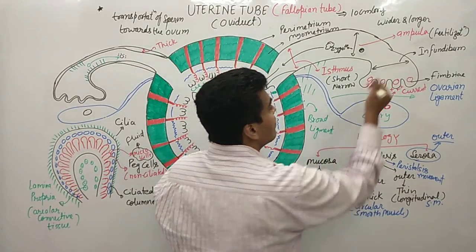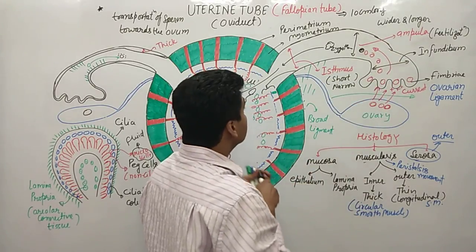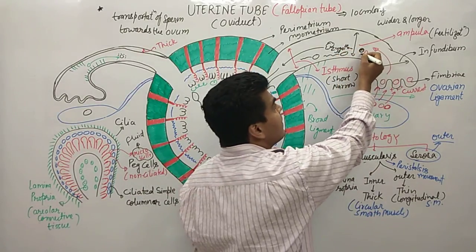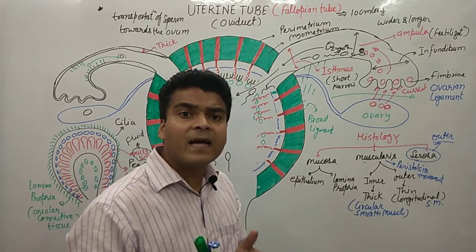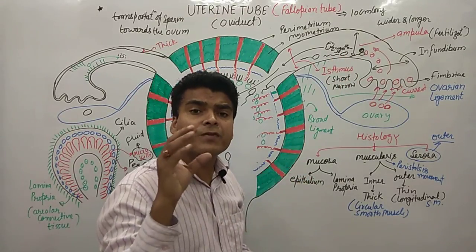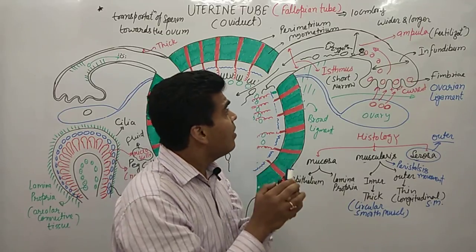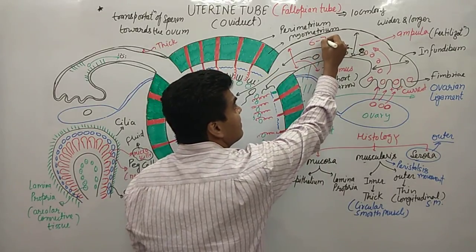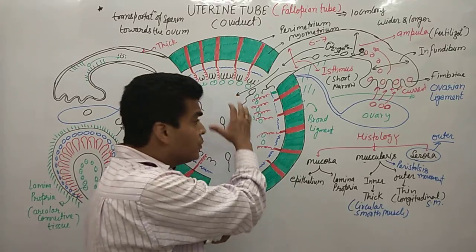The ovum moves in this direction into the fallopian tube, and sperm will be found moving in that direction as well. After fertilization, the nuclear material of the haploid ovum and sperm unite. The resulting zygote remains in the fallopian tube for 6–7 days, undergoing division, and then shifts into the uterus.